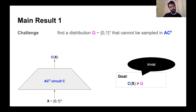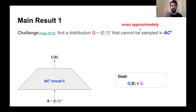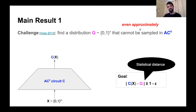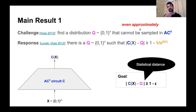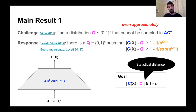The more interesting question raised by Viola in 2012 was: can we find a distribution that cannot even approximately be sampled by AC0? By approximately, we mean the output distribution of any AC0 circuit is 1 minus epsilon far from Q in statistical distance. This question was answered by Lovett and Viola in 2012, where they exhibited a meaningful explicit distribution such that the output distribution of any AC0 circuit is polynomially far from Q. A later paper by Beck, Pagliazzo, and Lovett improved this to be exponentially far.